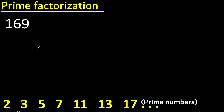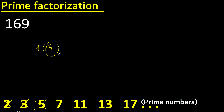Prime factorization of 169. It cannot be divided by 2 because the last digit is not even. Cannot be divided by 3 because 1 plus 6 plus 9 is 16, and 16 cannot be divided by 3. Cannot be divided by 5 because the last digit is not 5 or 0. Cannot be divided by 7.